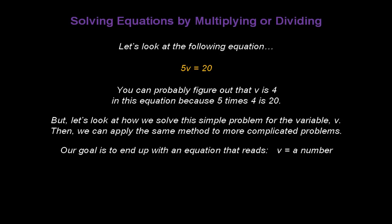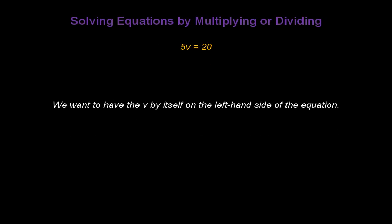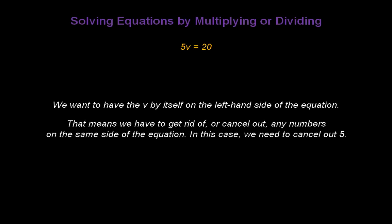Our goal is to end up with an equation that reads v equals a number. We want to have the v by itself on the left-hand side of the equation. That means we have to get rid of or cancel out any and all numbers on the same side of the equation. In this case, we only have one number. We need to cancel out 5.